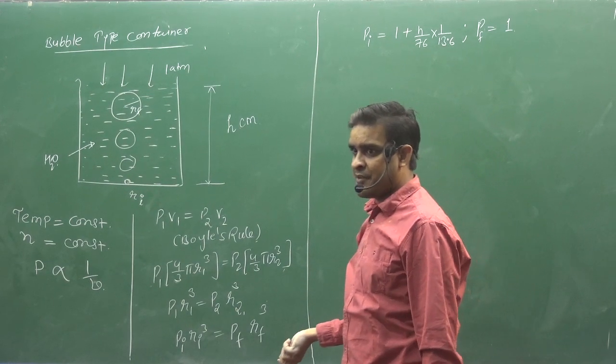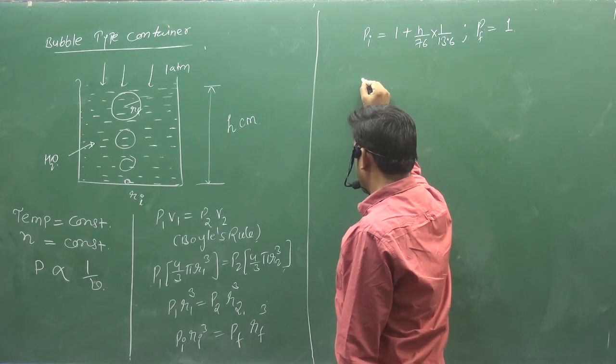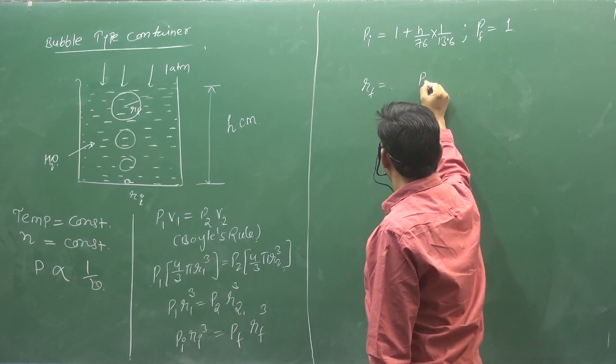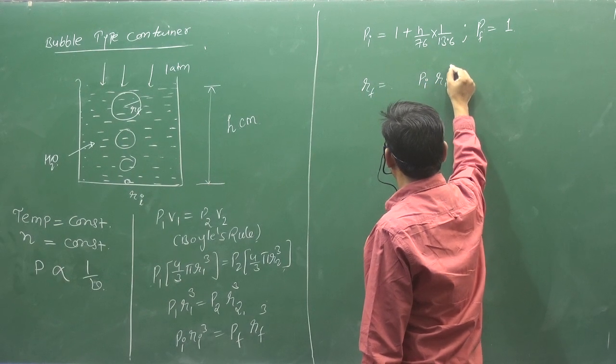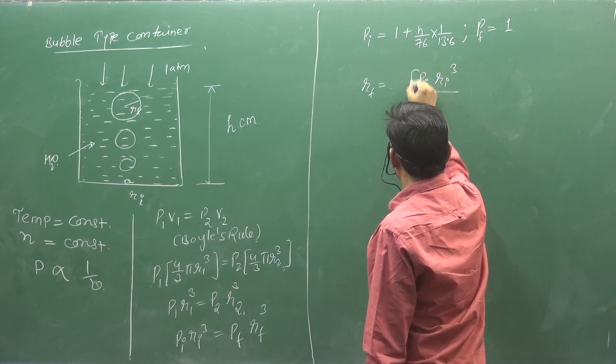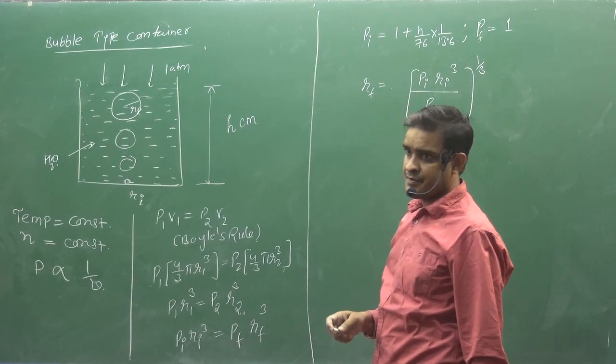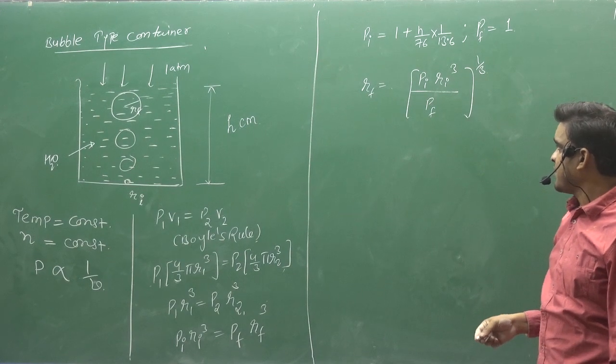Initial and final. So I will tell you R final will tell you. R final is going to be fine. So for me R final value is going to be fine. P initial R initial cube upon P final, whole power 1 by 3.